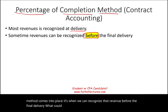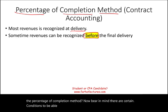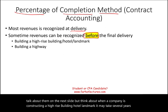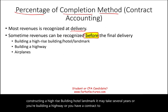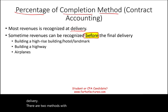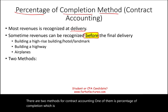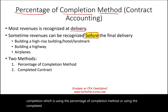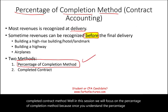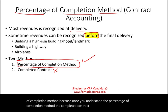Examples where you would use the percentage of completion method include constructing a high-rise building, hotel, landmark, highway, or a contract to build airplanes — projects that may take several years. There are two methods for contract accounting: the percentage of completion method and the completed contract method. This session focuses on the percentage of completion method, because once you understand it, the completed contract method is easy.